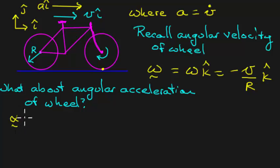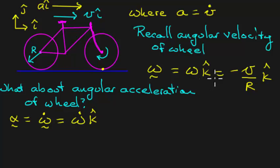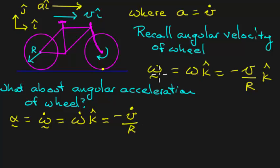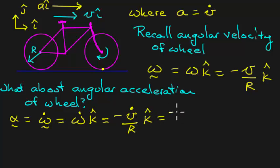The angular acceleration alpha is, by definition, the time derivative of angular velocity. Taking the time derivative of omega — which is minus v over r in the k-hat direction, with r being the fixed wheel radius — gives us alpha equals minus v-dot divided by r. Since v-dot equals a, we can write the angular acceleration as minus a over r in the k-hat direction.